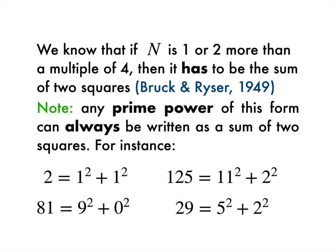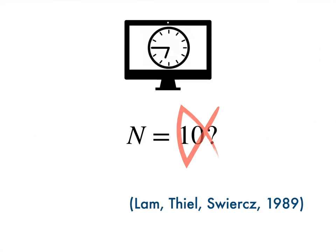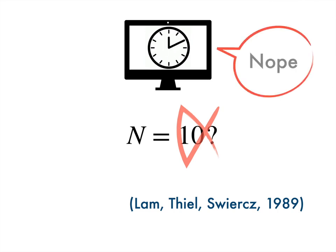So what does that mean for 10? 10 is two up from a multiple of four, and is the sum of two squares, one and nine, so does it work for 10? It turns out it doesn't. And this was shown in 1989 by three computer scientists whose names I've written down, and it took enormous computer power to do it. In fact, it was estimated between 2,000 and 3,000 hours of program runtime spread across two full years for the answer to come out.